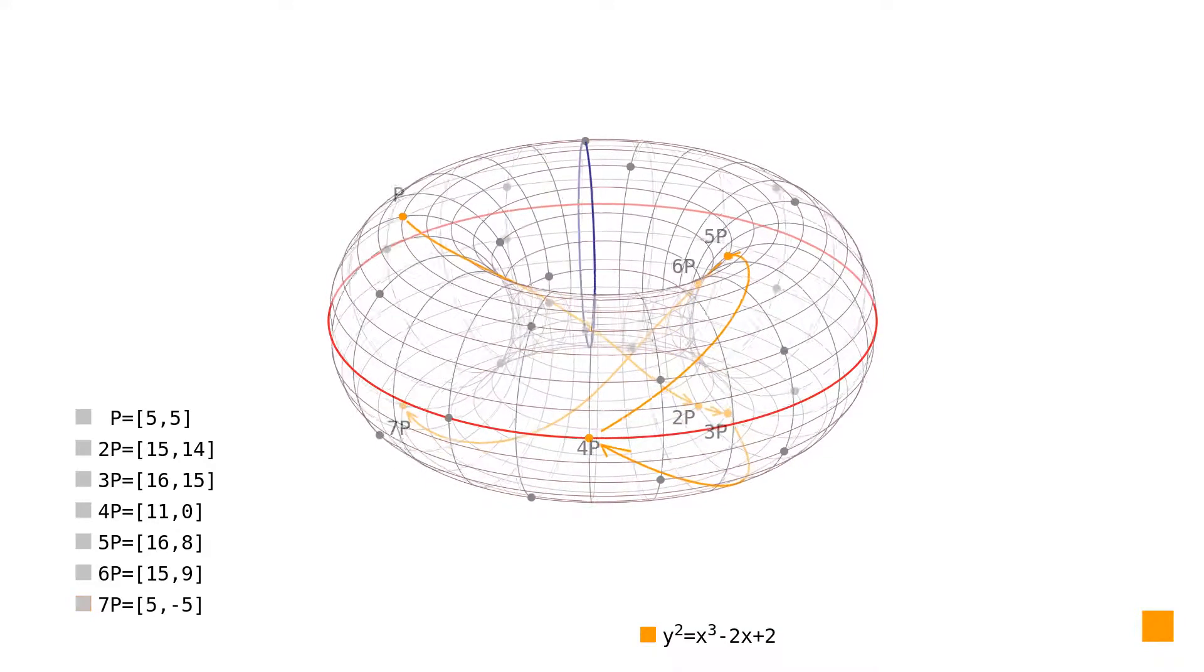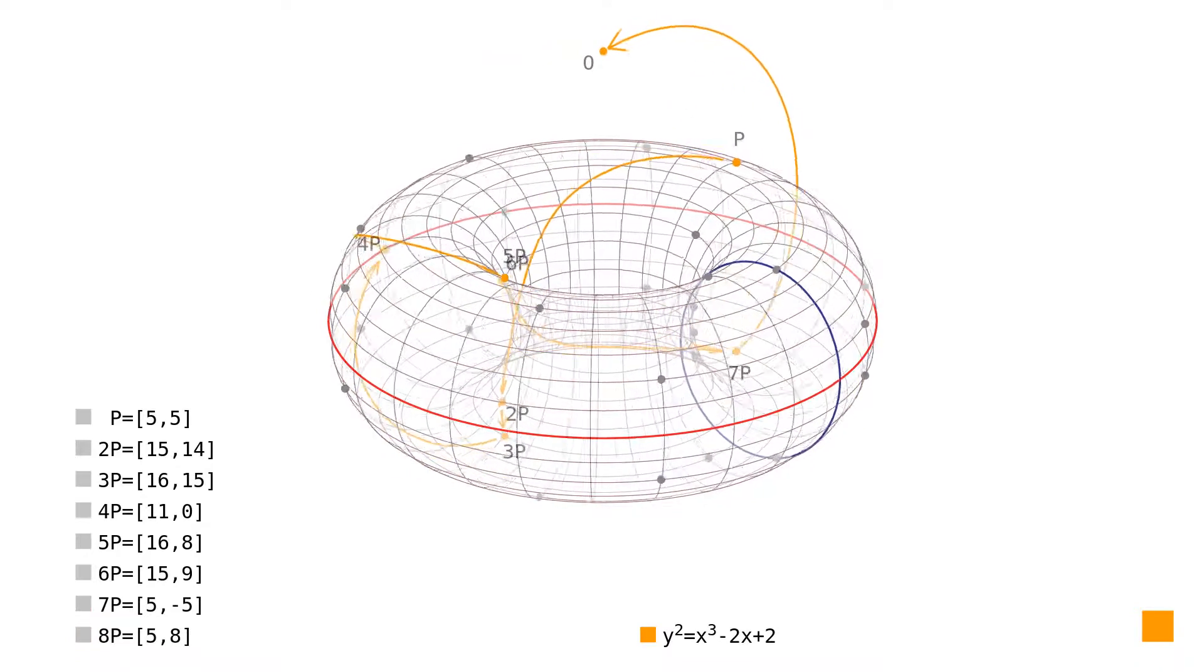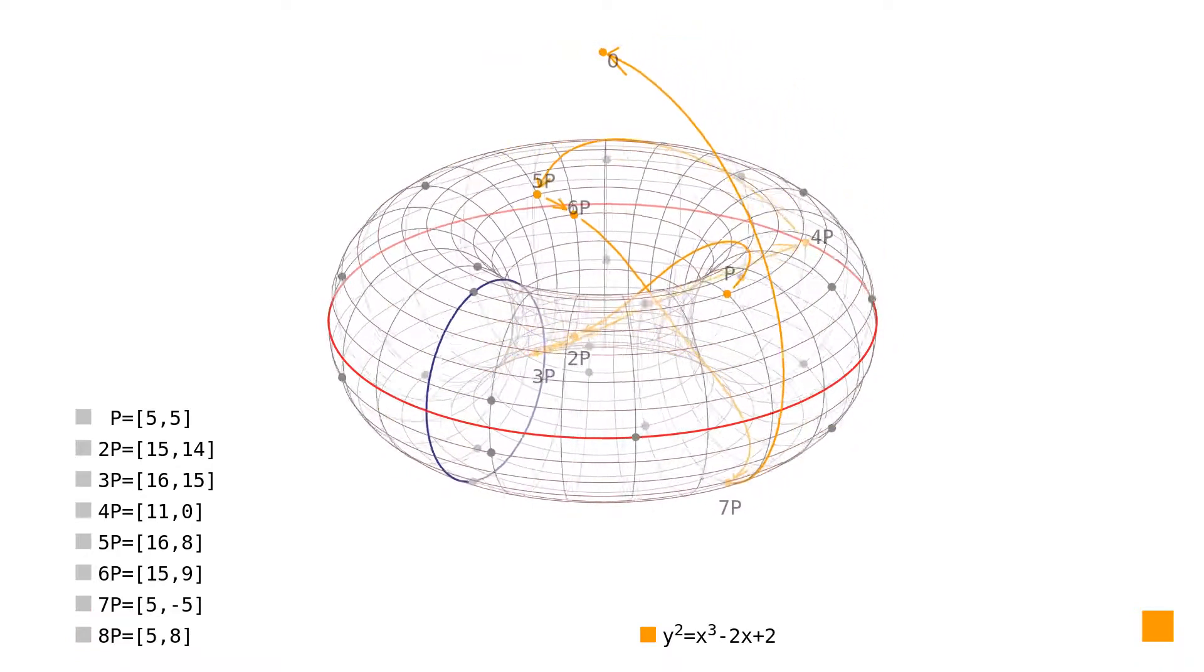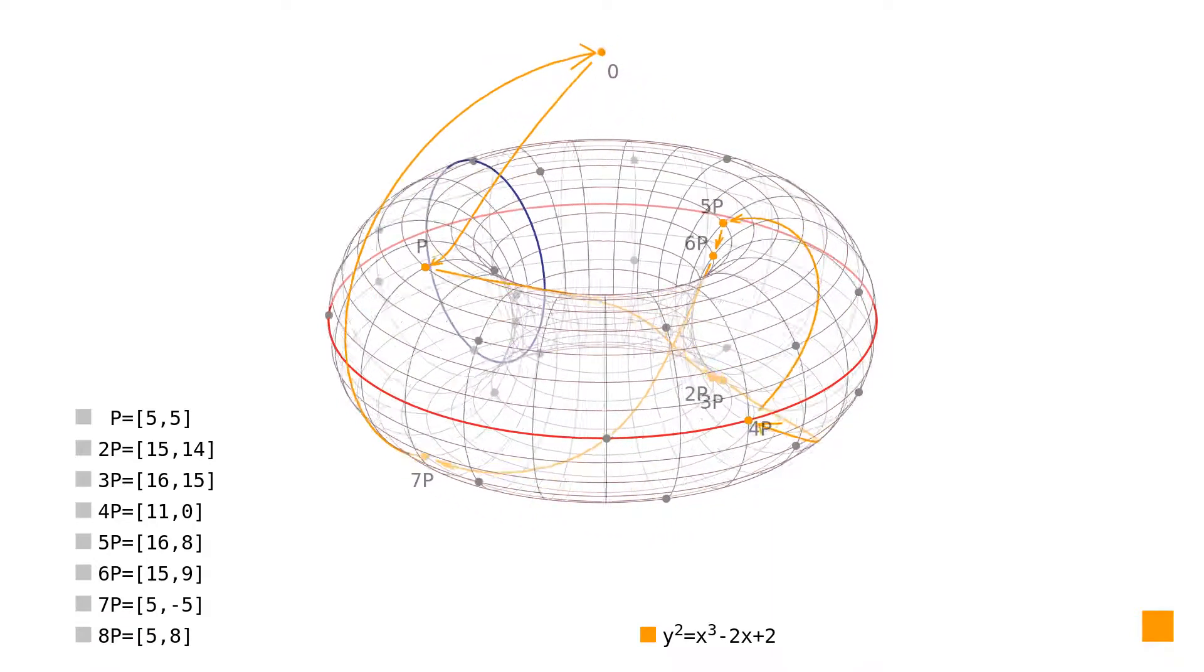Adding the original point P to the point 7P yields the point at infinity as a result. If we keep applying the rule and add the point P to the point at infinity, we get back to the point we started with and we can see that the points form a closed cycle.